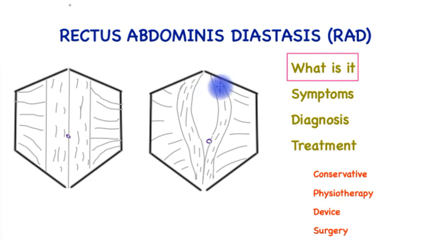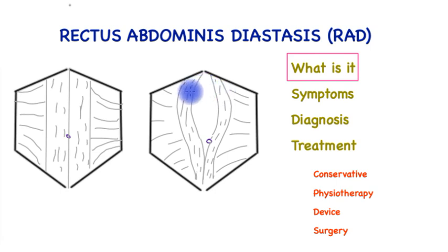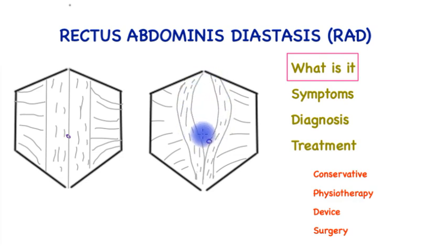Typically in young women after pregnancy, especially if they've had large babies and are of small size, or in middle-aged men who are overweight, the rectus abdominis stretches and allows separation of the rectus abdominis muscle on either side, allowing a bulge to form in this area — this is called diastasis.